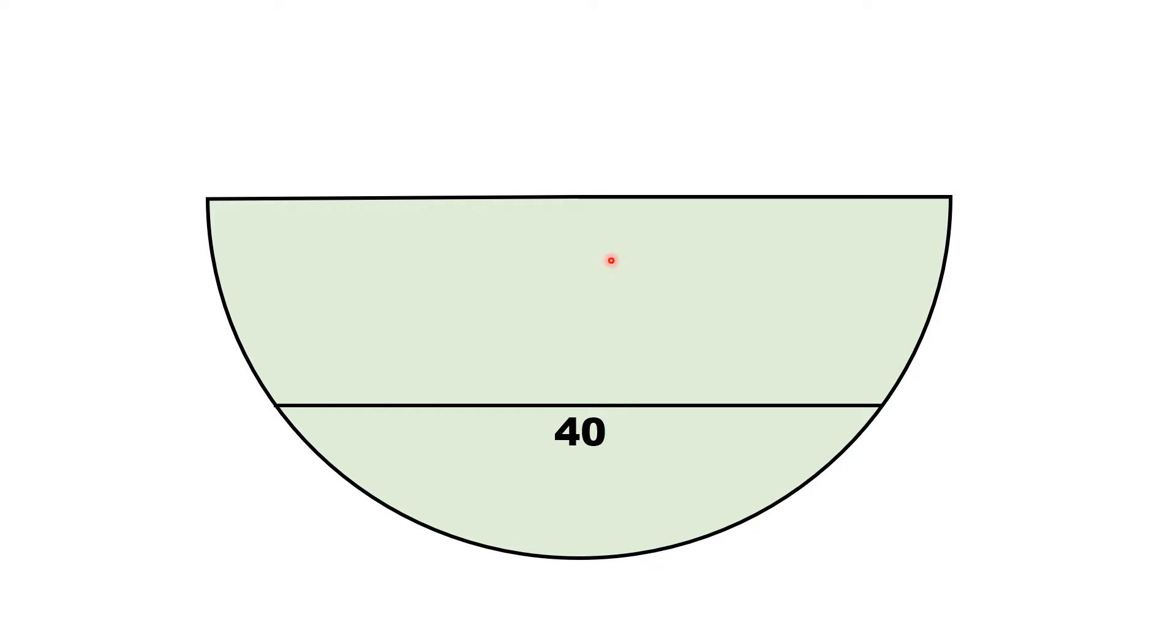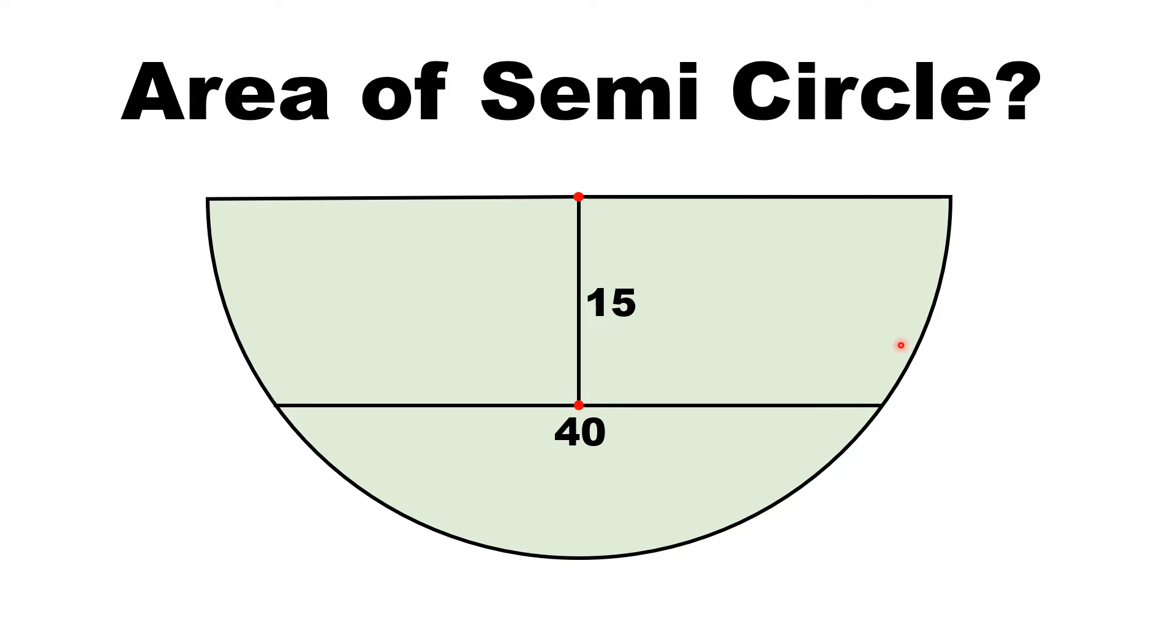From the center of the semicircle, a vertical is drawn to the chord and this vertical line segment has length equal to 15 units. Then by this limited data, we have to find the area of semicircle.